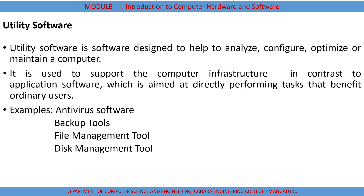The third type is utility software — software designed to help analyze, configure, optimize, or maintain a computer. It sits above application or system software and is used primarily for maintenance, analyzing the status, or checking the health condition of a computer. It is a supporting software, not a major software — it performs supporting tasks. Examples include antivirus software, backup tools, file management tools, and disk management tools.